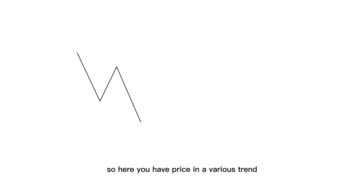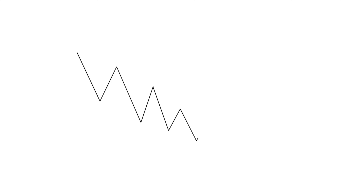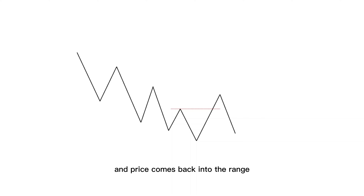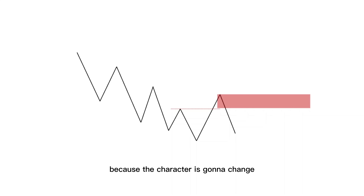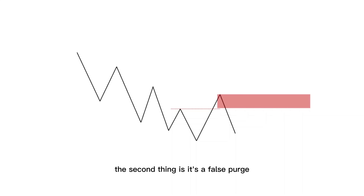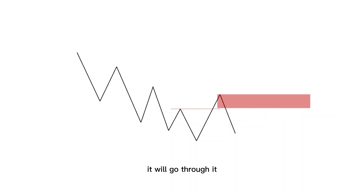We're going to start off with your change of character breakout order block. Here you have price in a bearish trend, but now you have a break of structure and price comes back into the range. When price comes back into the range, you have an order block form. And why is this a false order block? Not only is this an order block that's going counter trend because the character is going to change, but the second thing is it's a false purge. And when price does attack that order block, it will go through it.